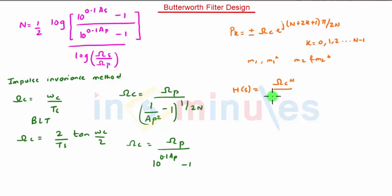And if the poles are complex conjugate pairs then it will be H of S is equal to omega C raised to N upon M minus M1 times M minus M1 star times M minus M2 times M minus M2 star. So this will be the complex conjugate pair.